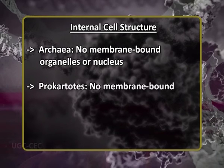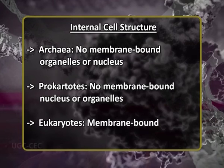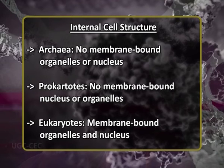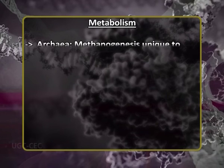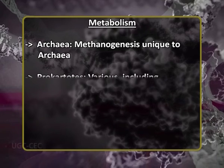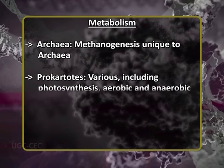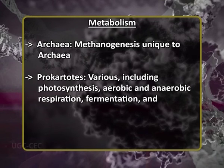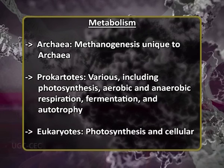Similarly, in prokaryotes there are no membrane-bound nucleus or organelles, while in eukaryotes there are membrane-bound organelles and a well-defined nucleus. Regarding metabolism: archaea take various routes with methanogenesis unique to archaea only; prokaryotes also take various routes including photosynthesis, aerobic and anaerobic respiration, fermentation, and autotrophy; while in eukaryotes only photosynthesis and cellular respiration are the routes to metabolism.